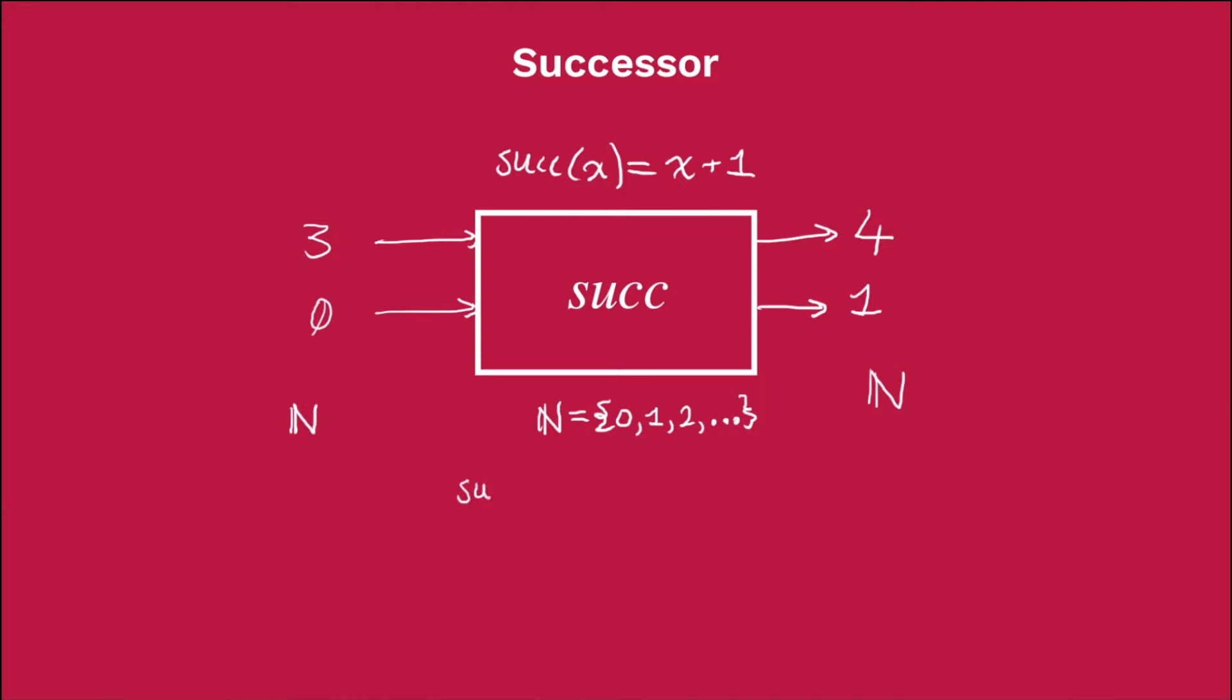So we can write out successor is a function from natural numbers to natural numbers. Notice also that it's a total function because the successor of any natural number, that is any natural number x, x plus 1, is defined and is another natural number. So this is a total function.